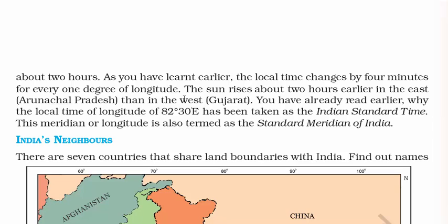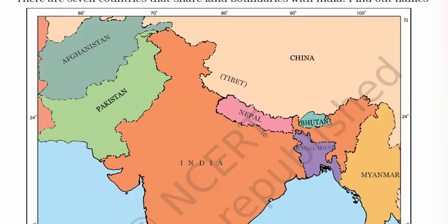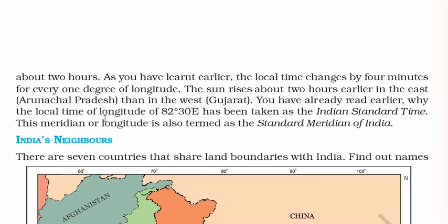The sun rises about two hours earlier in the east — Arunachal Pradesh — than in the west — Gujarat. This is quite obvious given that the difference between them is 2,900 kilometers. The local time of 82.5 degrees east longitude is the Indian Standard Time, and this passes through Allahabad in Uttar Pradesh.